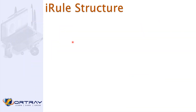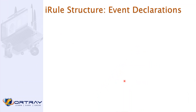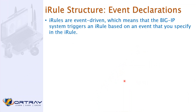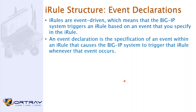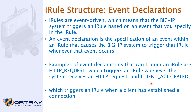The iRule structure is: rule name, when event, if condition, then action. Regarding event declarations — iRules are event-driven, meaning the Big-IP system triggers an iRule based on an event you specify. The event declaration is the specification within the iRule that causes Big-IP to trigger it. Examples include HTTP_REQUEST, which triggers an iRule whenever the system receives an HTTP request, and CLIENT_ACCEPTED, which triggers an iRule when a client establishes a connection.